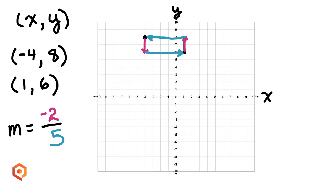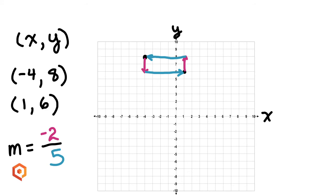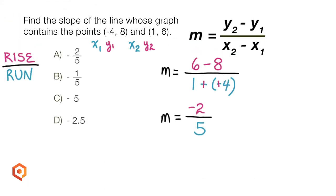It's all about finding the difference in the y's over the difference in the x's. Now, back to our original problem. We found the slope to be negative 2 over 5.